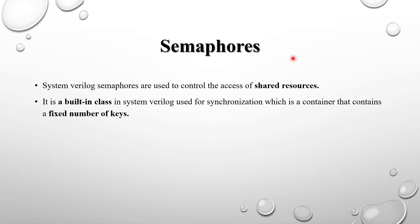Semaphore uses the mutual exclusion principle. Mutual exclusion is a condition where two processes cannot occur at the same time — one by one they should execute. Since semaphore is a built-in class, we assign a handle just like a normal class. It is a container with a fixed number of keys; processes must get the key from the bucket to continue execution.